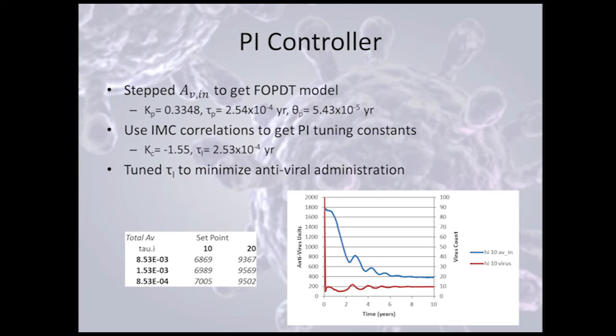We did a step test on the antiviral using those previous models to get the process constants for the first order plus dead time, as you can see there. Then we used the IMC correlations built into Loop Pro to get the PI tuning constants. We did try the PID tuning constants as well, but the derivative term didn't really do anything for the system, so we left it off because it's easier to run a PI controller.